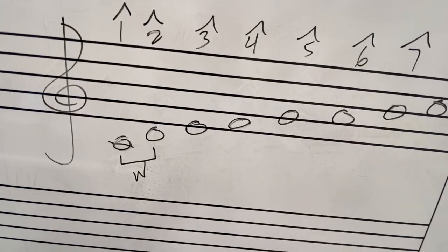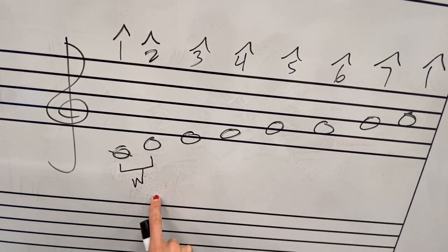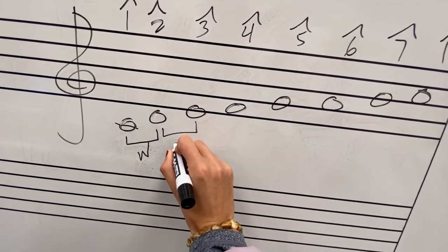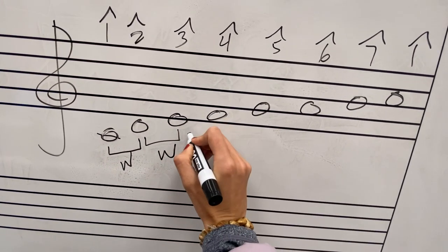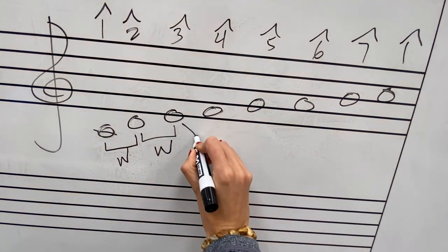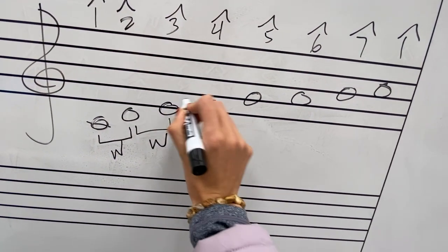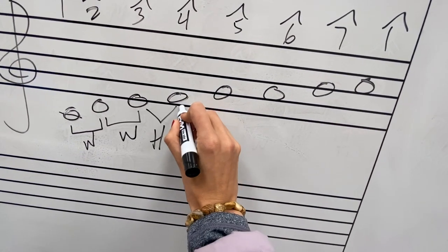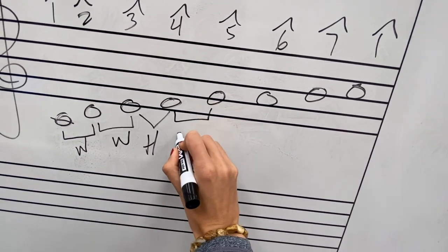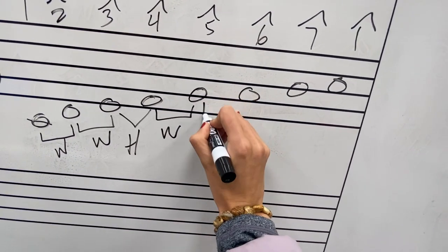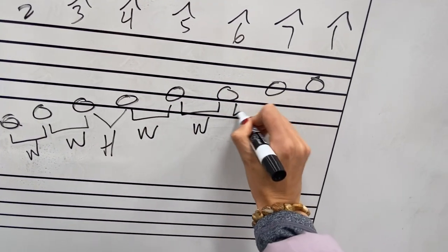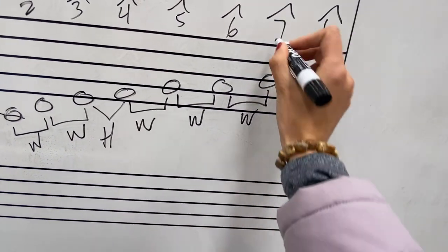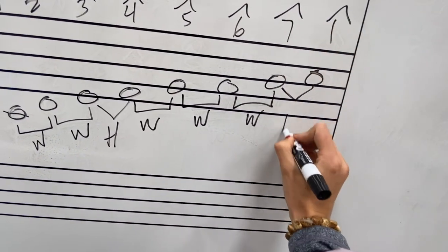Scale degree one to two is going to be a whole step apart. From scale degree two to three is a whole step apart. Scale degree three to four is going to be a half step — E to F right here is a half step. F to G is a whole step, G to A is a whole step, A to B is a whole step. B to C, the seven to one, is a half step.